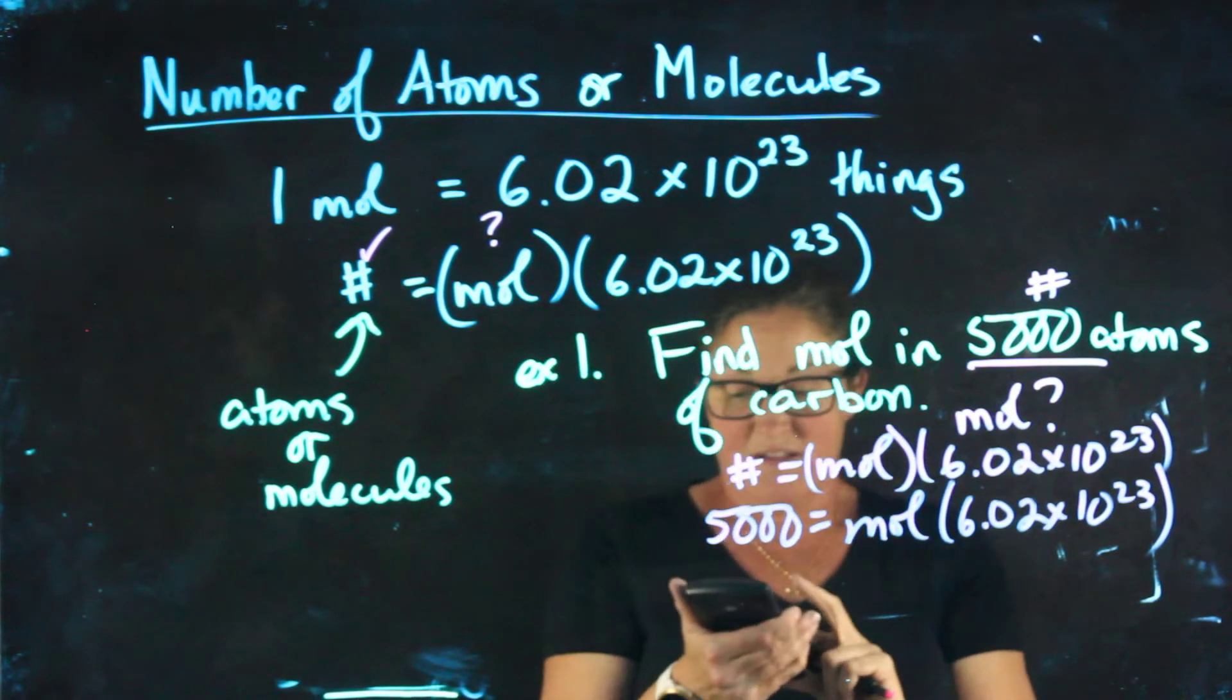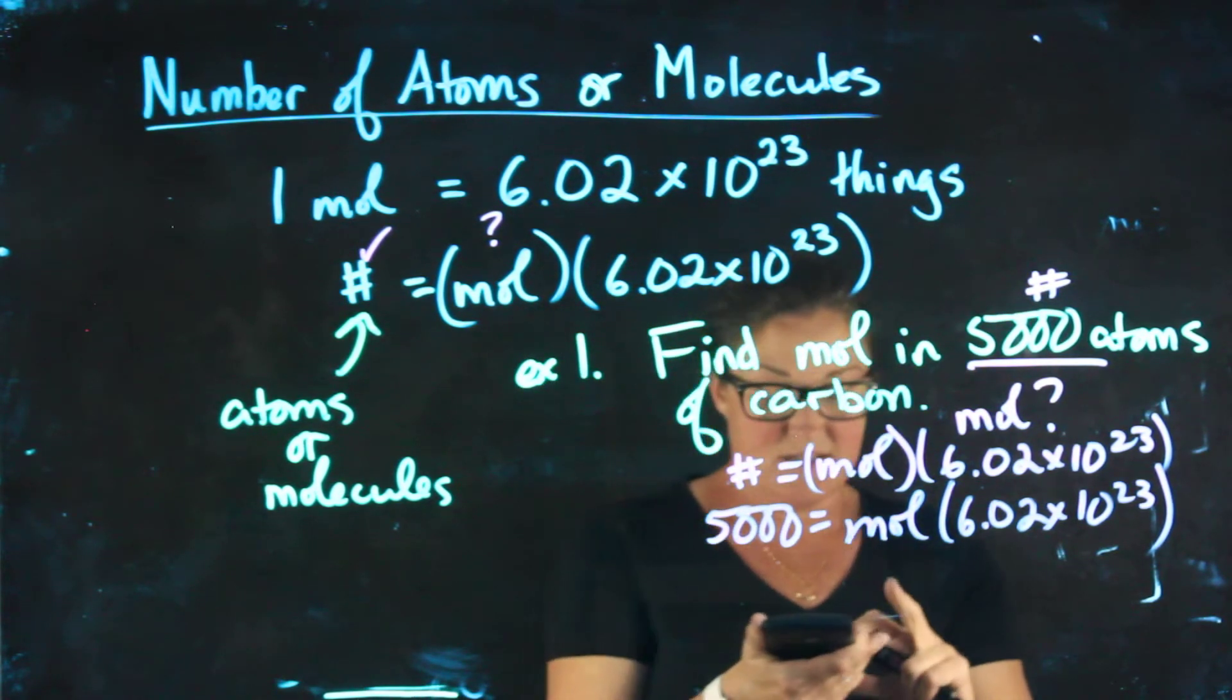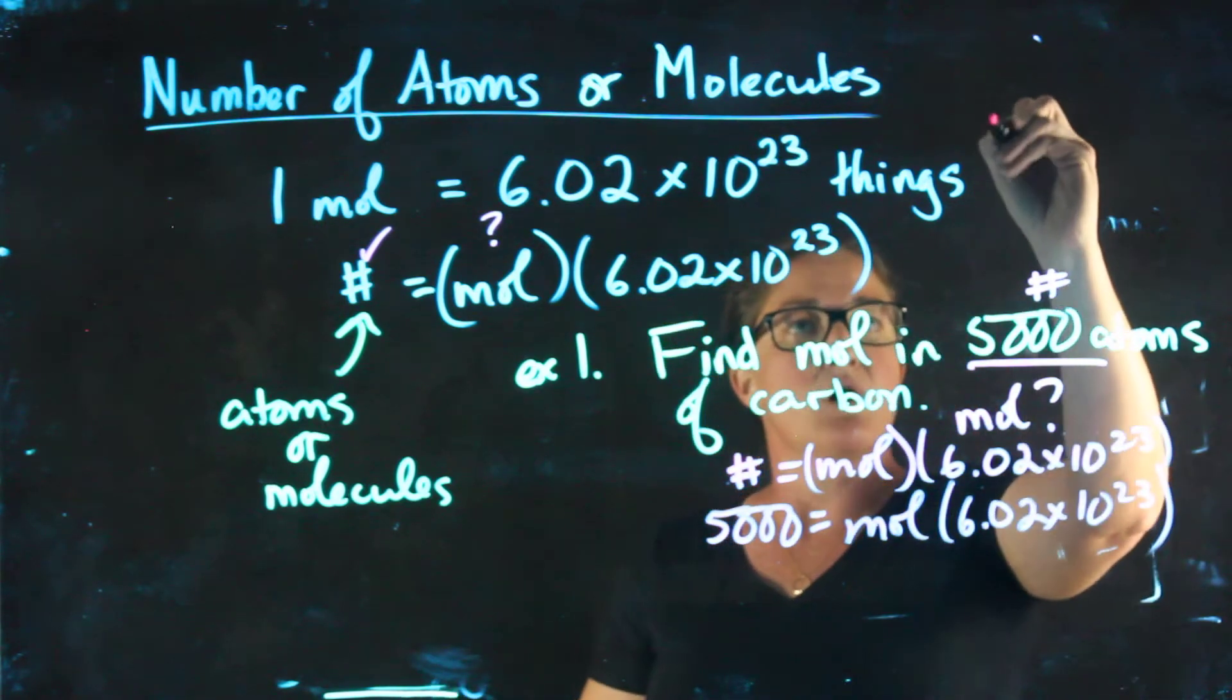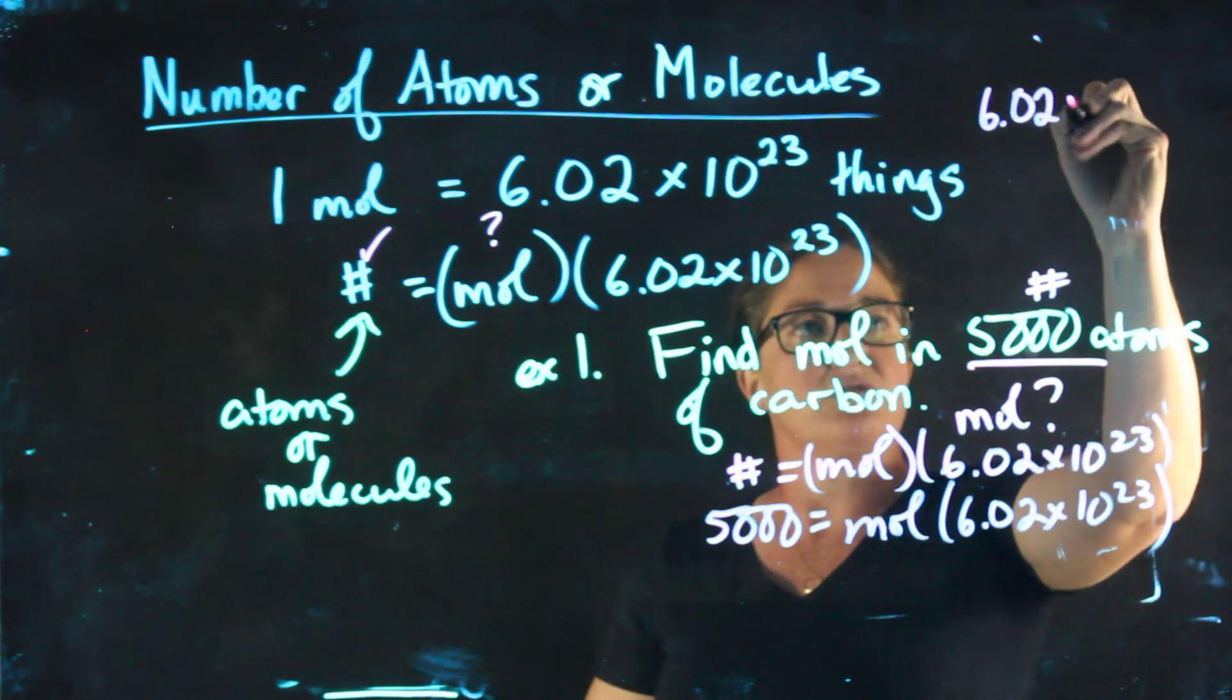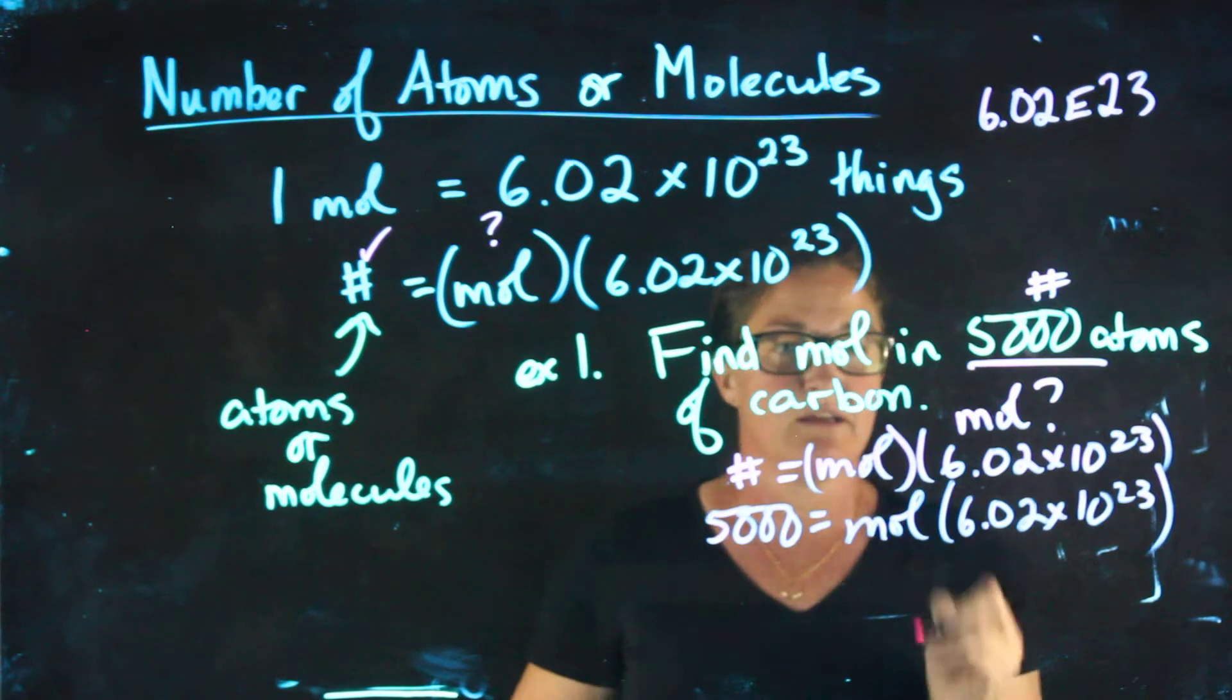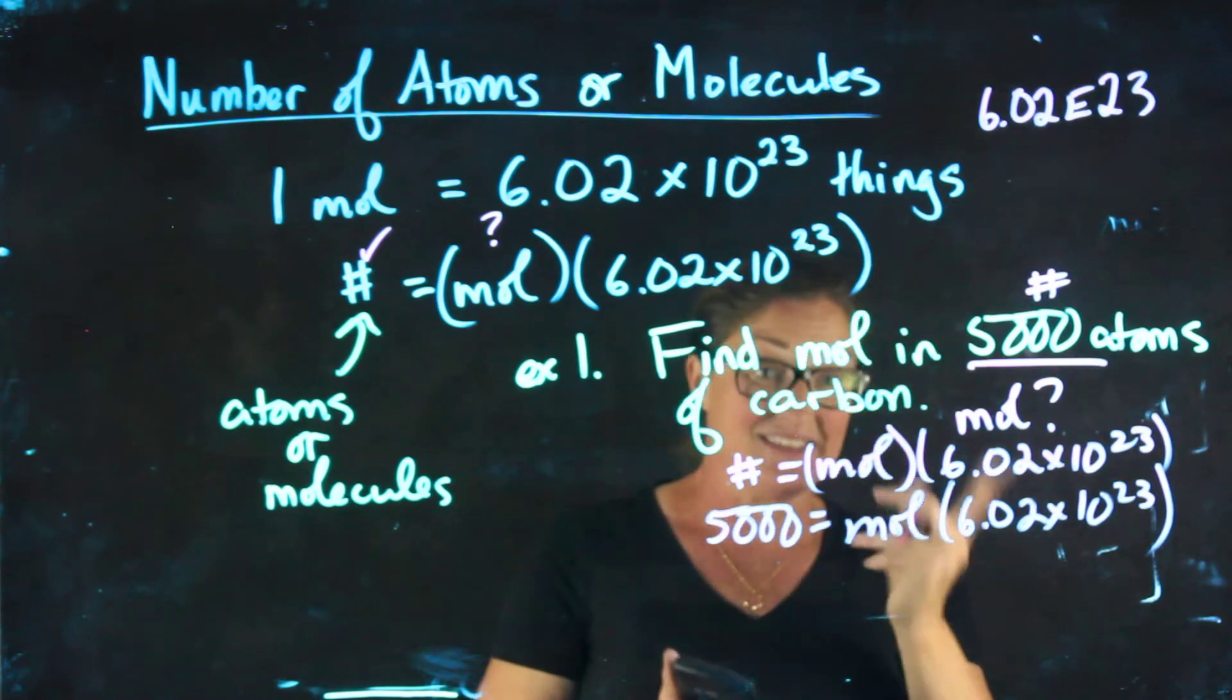Plugging into my calculator, 5000 divided by. When you do the scientific notation on your calculator, it's most likely that you're using a button that looks like a double E, but when you type it, it's just going to be a single E, and it's a capital E.